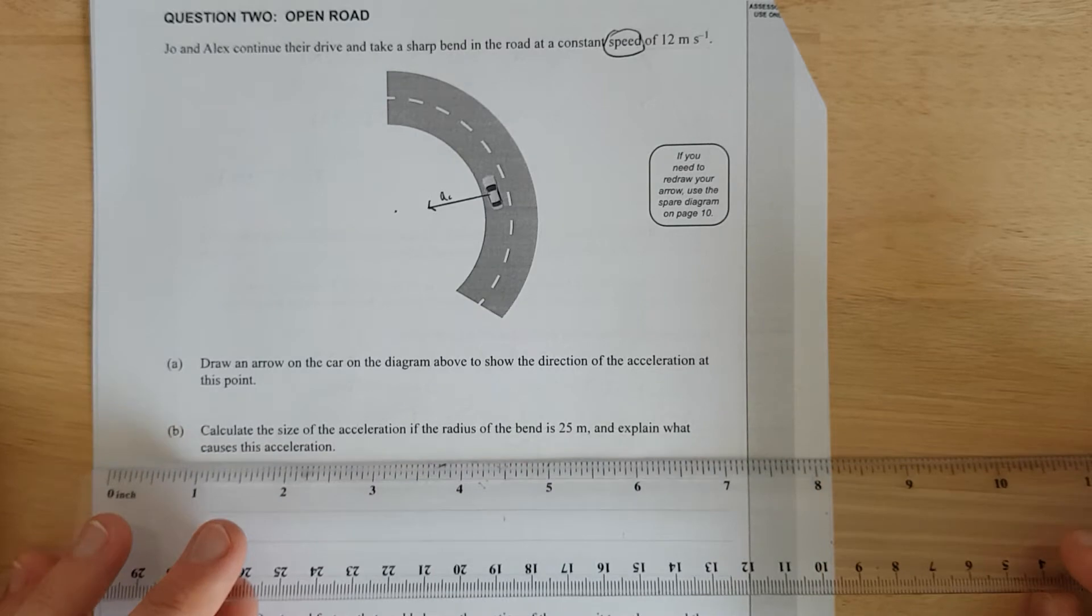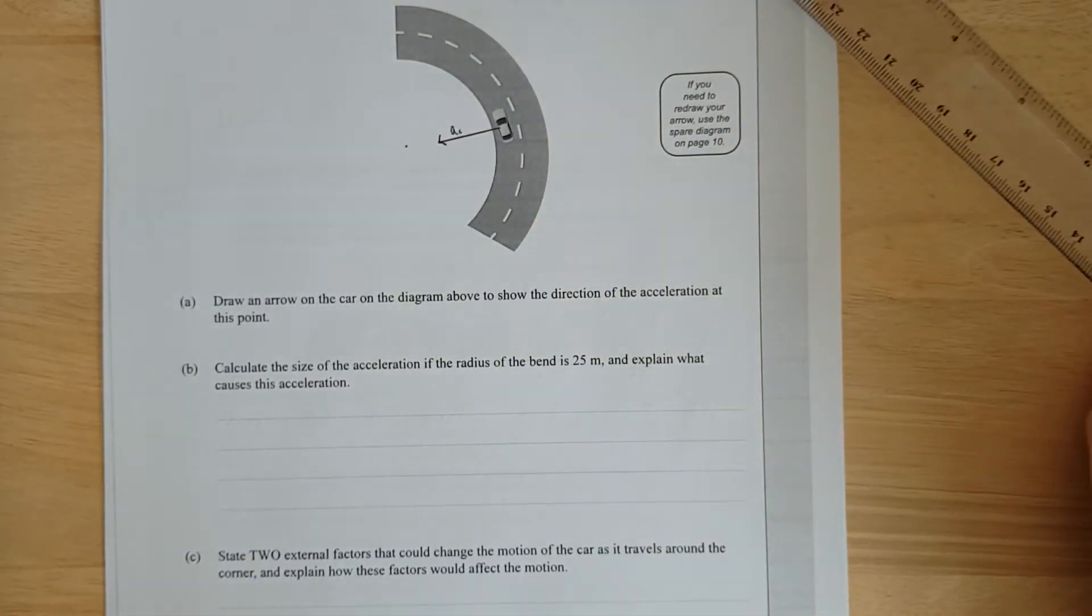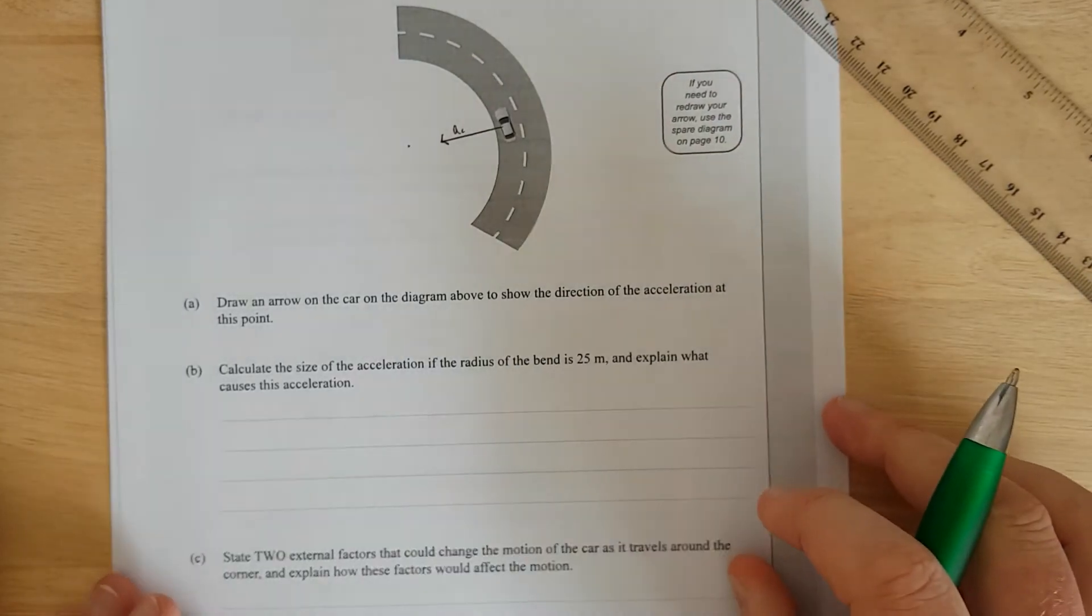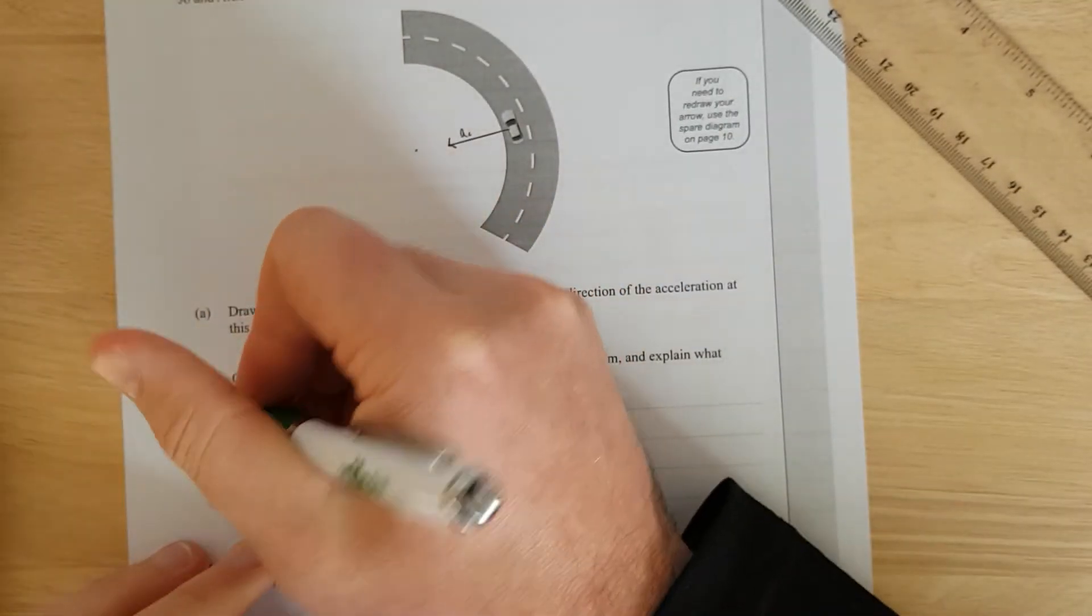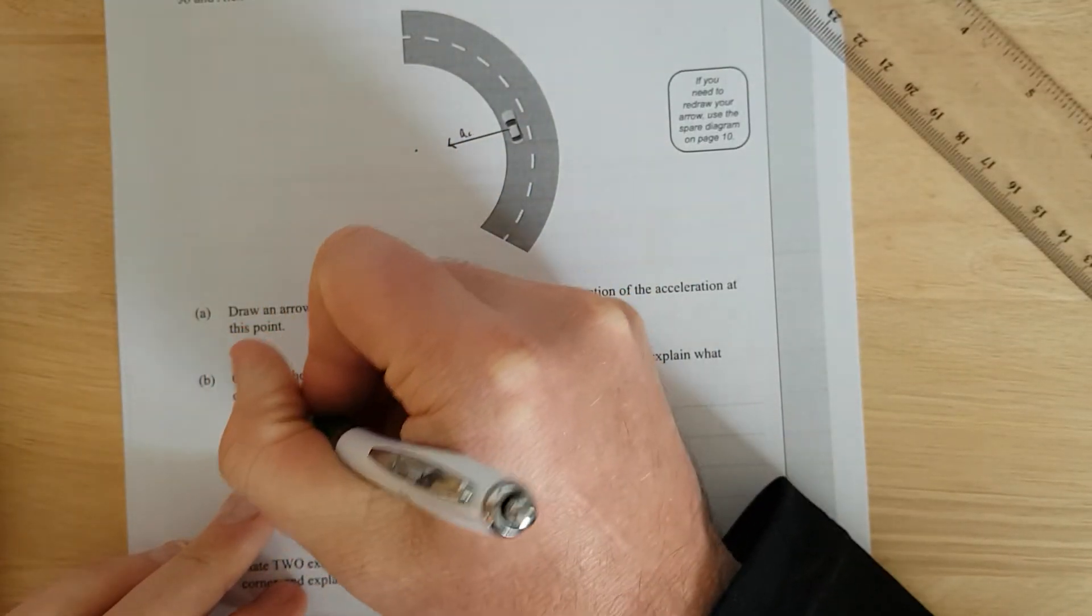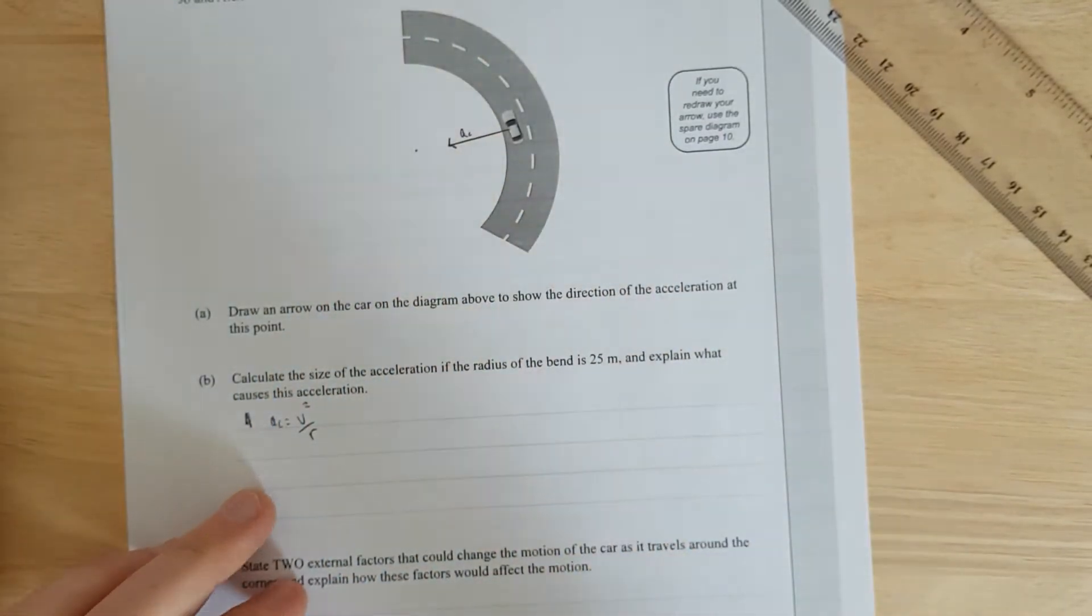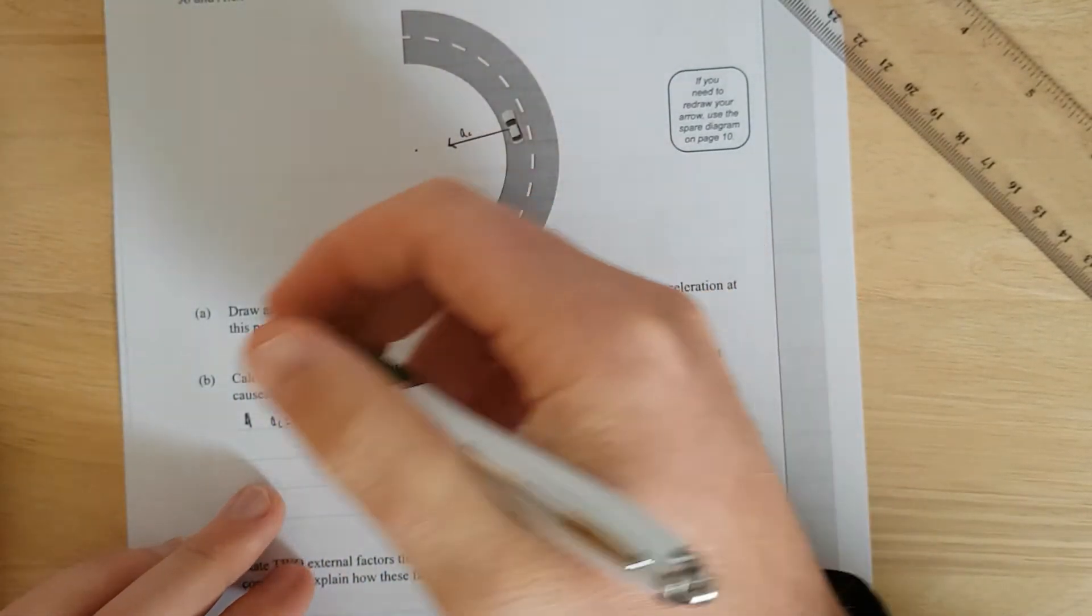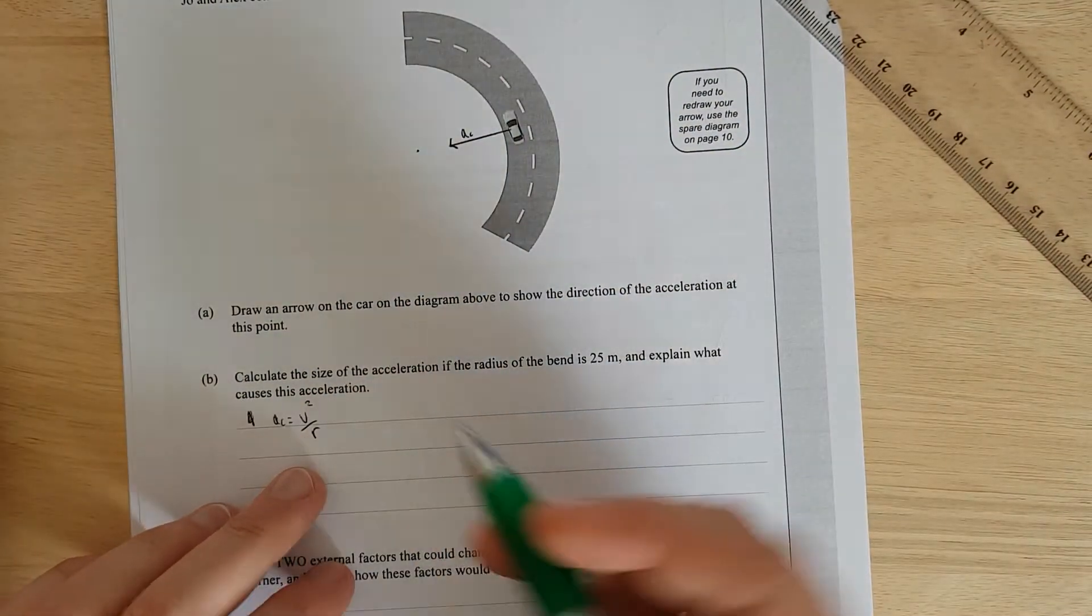Part B: calculate the size of the acceleration if the radius of the bend is 25 meters and explain what causes this acceleration. So in your formula sheet, I'm pretty sure you get given AC equals V squared over R. Pretty sure you get given that. Yeah, I looked it up. You totally do get given this formula.